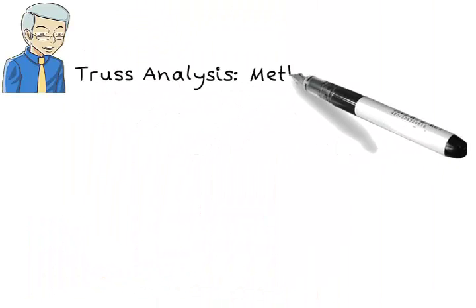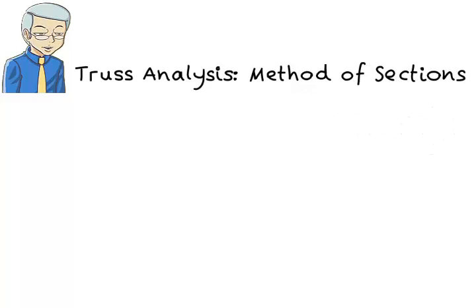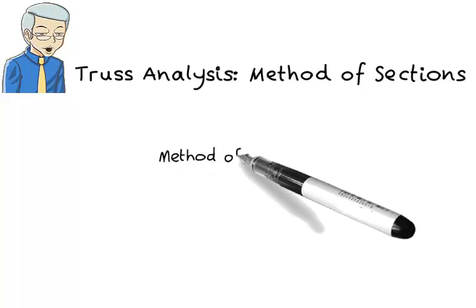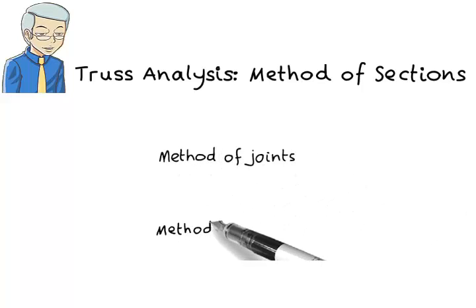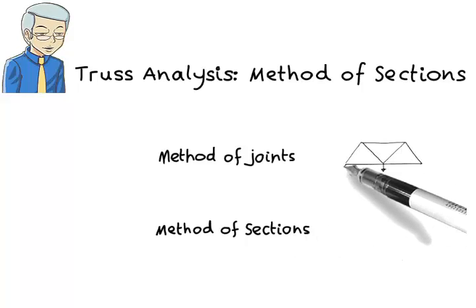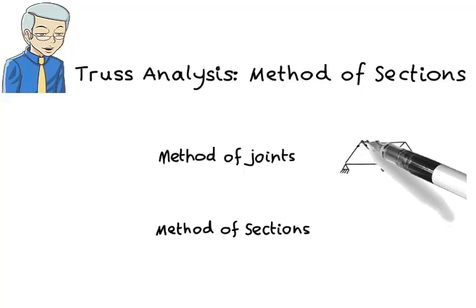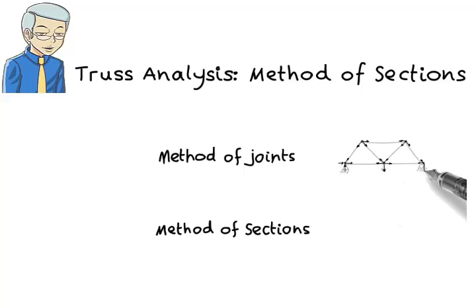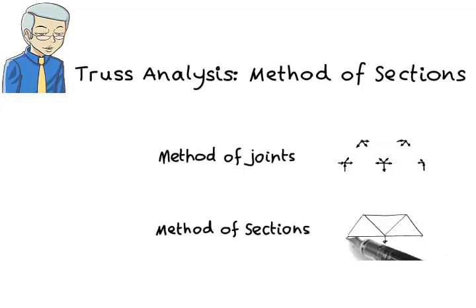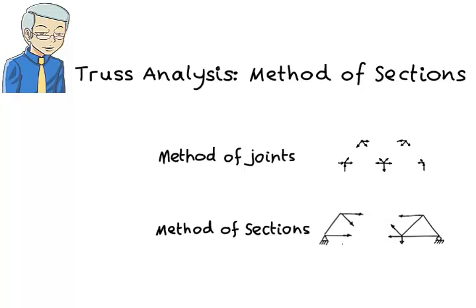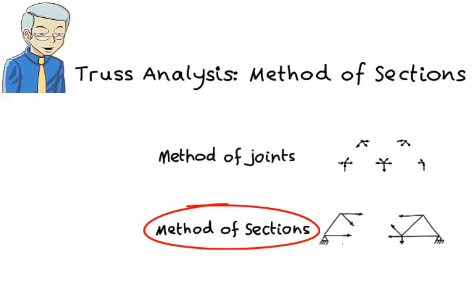Truss Analysis: Method of Sections. There are two basic techniques for analysing statically determinate trusses: the method of joints and the method of sections. The method of joints is preferred when the entire truss is to be analysed and all member forces are to be calculated. The method of sections, on the other hand, provides a quick way for calculating the force in a few members only. We discussed the method of joints in a previous lecture; in this presentation we are going to cover the method of sections.